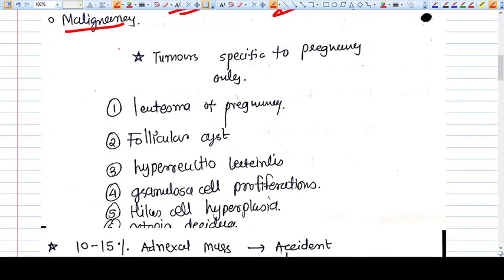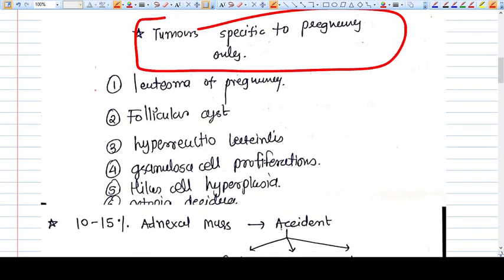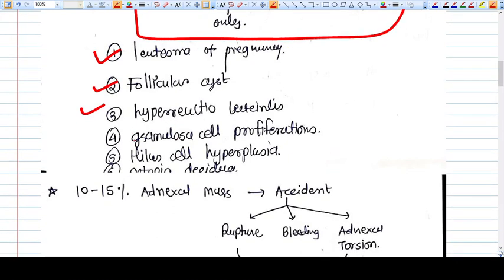There are some tumors which are very specific to pregnancy. If the pregnancy is there, this tumor can be seen, and when the pregnancy ends, this tumor will disappear. These are luteoma of pregnancy, follicular cyst, hyperreactio luteinalis, granulosa cell proliferans, hilar cell hyperplasia, and even decidual changes.